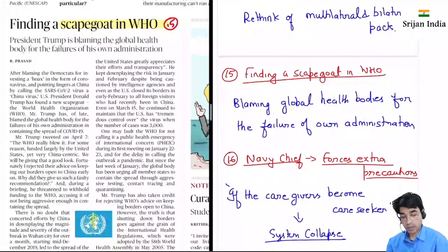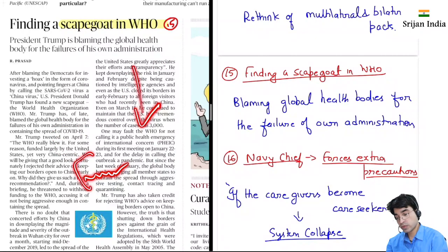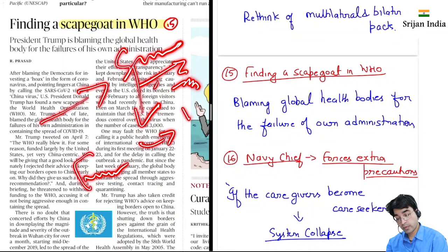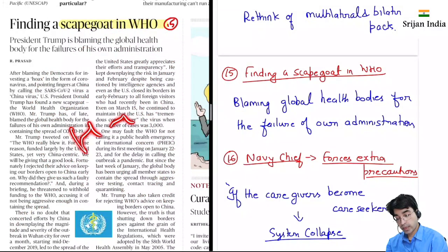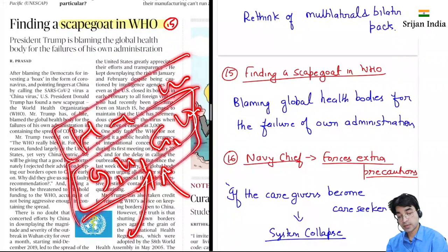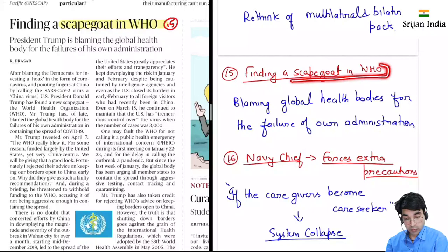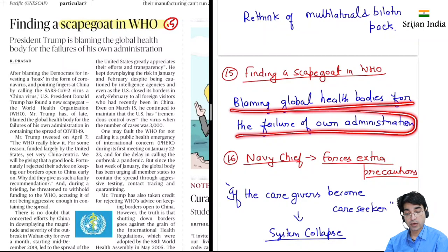Finding a scapegoat in WHO — sab ab blame kar rahe hain countries, because countries didn't act in a responsible manner. Europe mein log social distancing nahi follow kar rahe the, koi protocol nahi follow kar rahe the, apne great healthcare system pe bahut reliant the. But jab COVID-19 attack aaya toh pura healthcare system overwhelm ho gaya — Italy, UK, France, USA, these are great countries in terms of healthcare systems and that is collapsing. Toh yeh scapegoat dhundh rahe hain WHO mein, blaming global health bodies for the failure of their own administration.